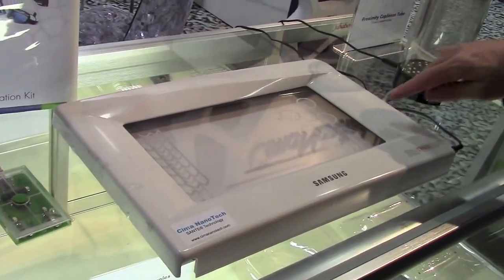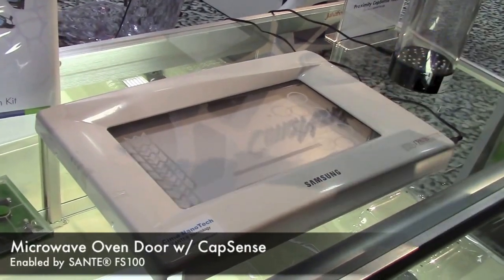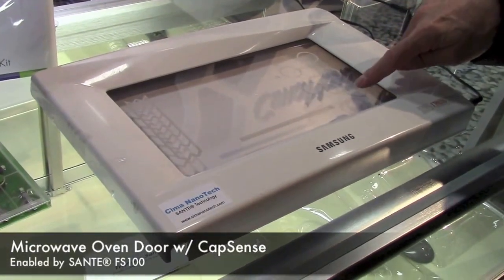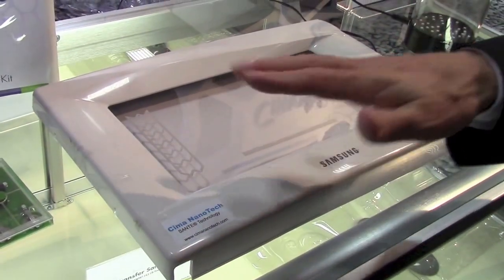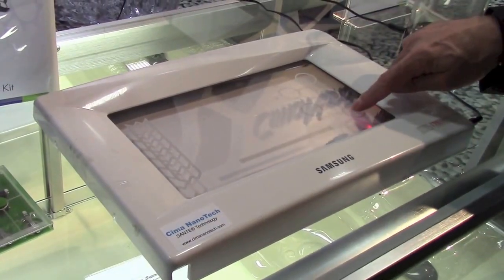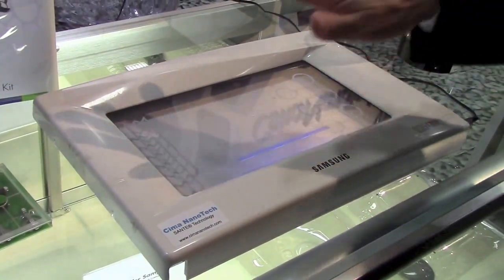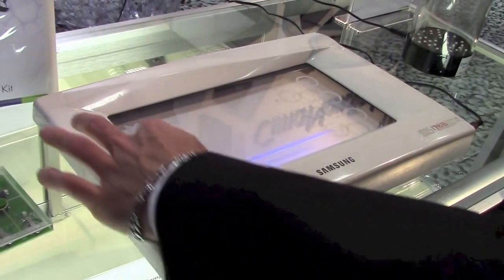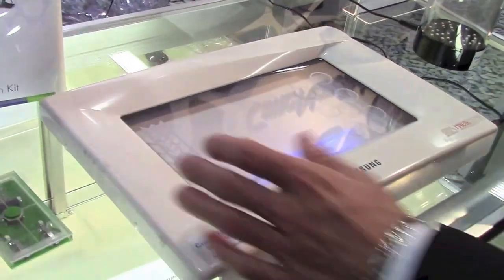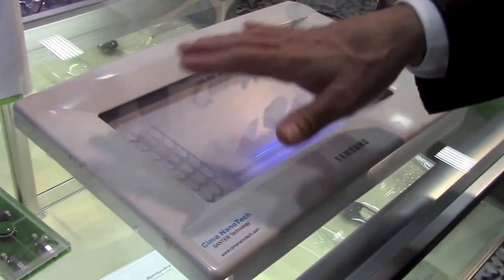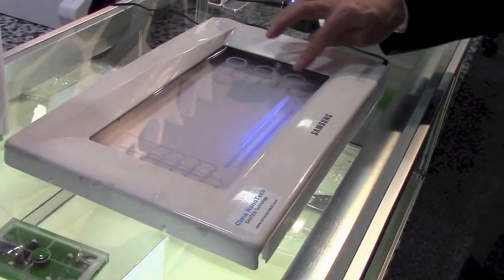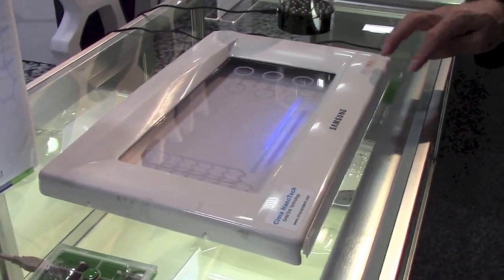In addition to that, you can build, I showed you the EMI shield for the microwave oven door. Because it's a continuous sheet, you can pattern the sheet and integrate touch buttons, touch sensors, proximity sensors, sliders. All the controls can be integrated into that same sheet that's also performing the EMI shielding.